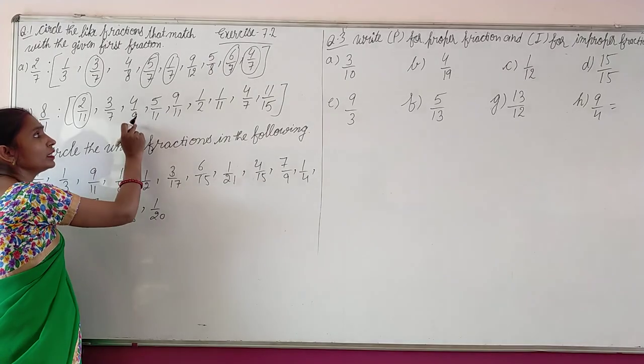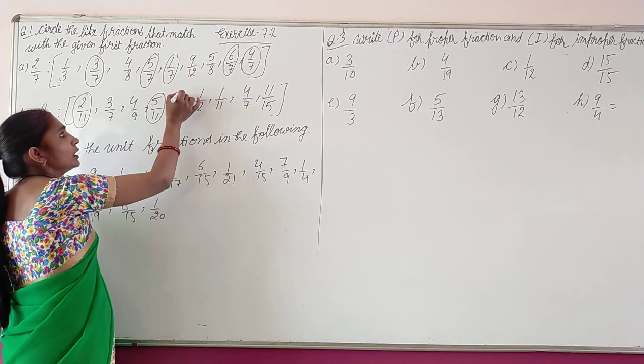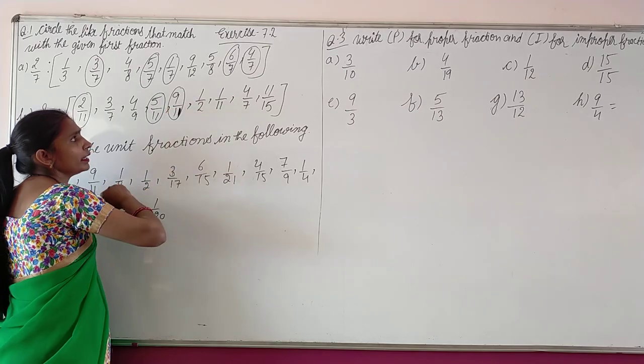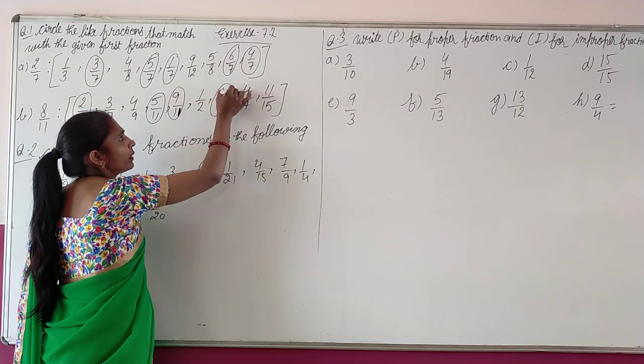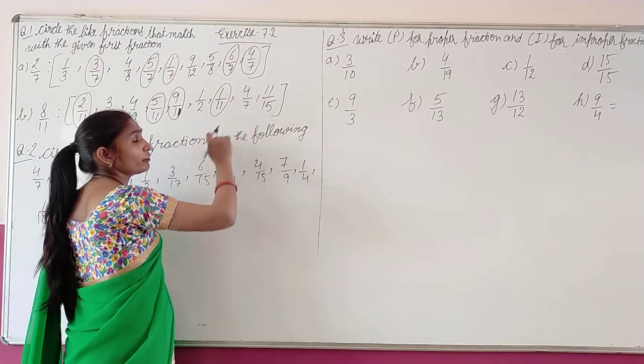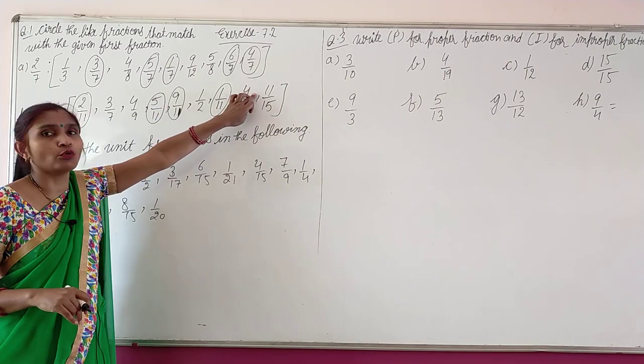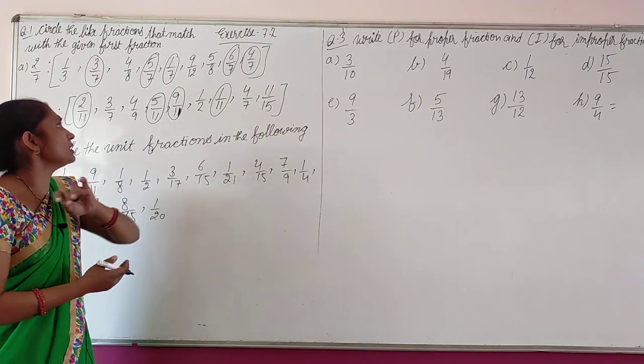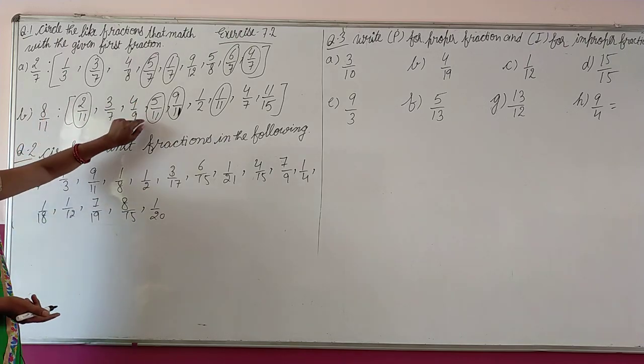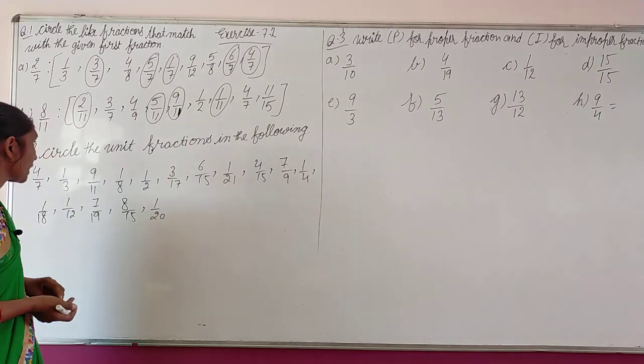For 5 by 11: 9 by 11, 1 by 11, 4 by 7 no, 11 by 15 no. Kyonki hume toh denominator 11 chahiye. Toh 8 by 11 ke like fractions kaun kaun hai? 2 by 11, 5 by 11, 9 by 11, 1 by 11.